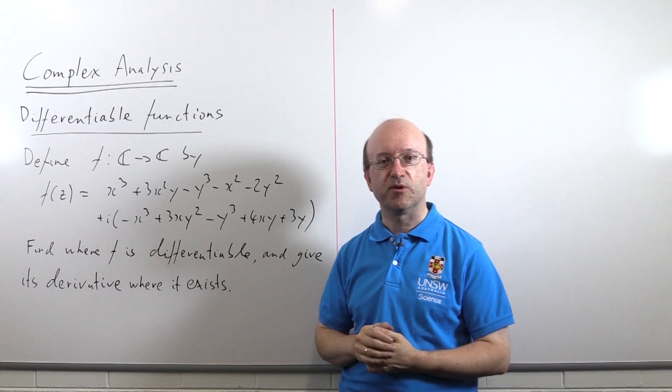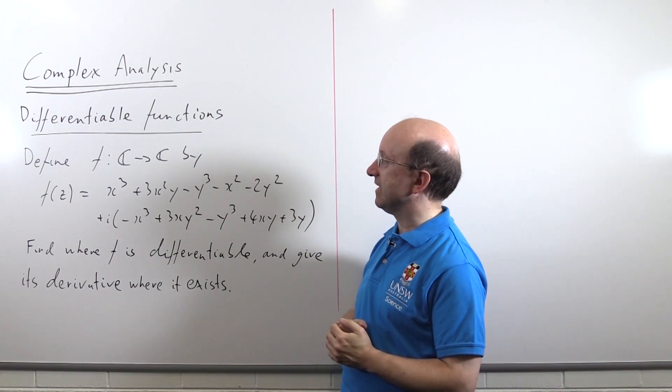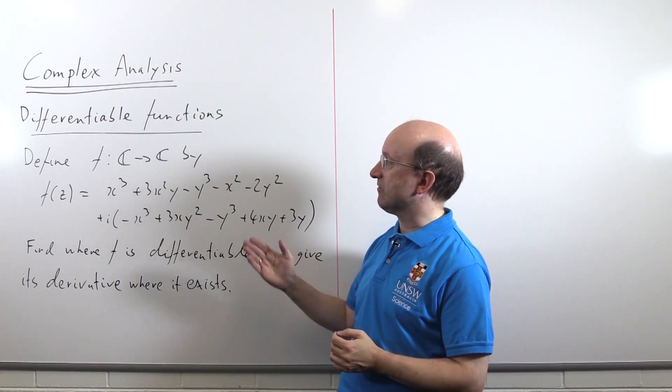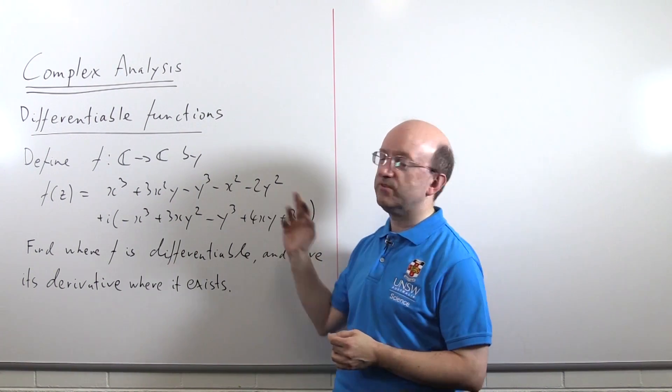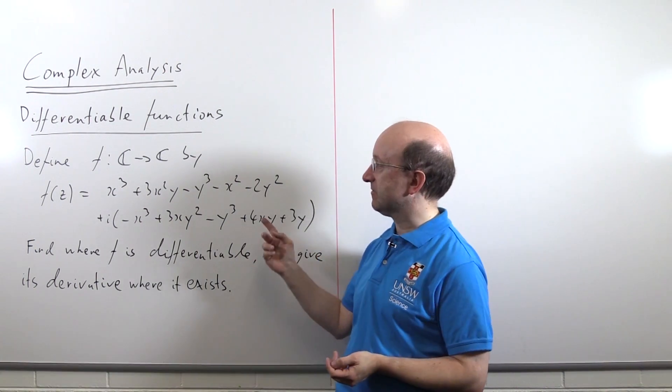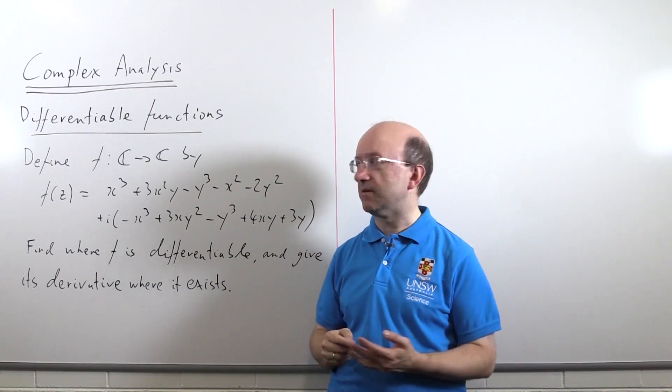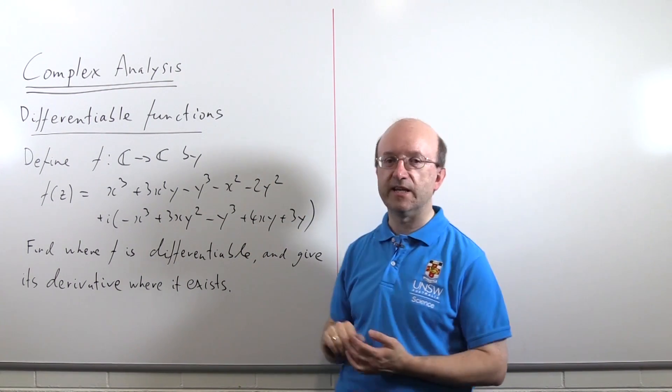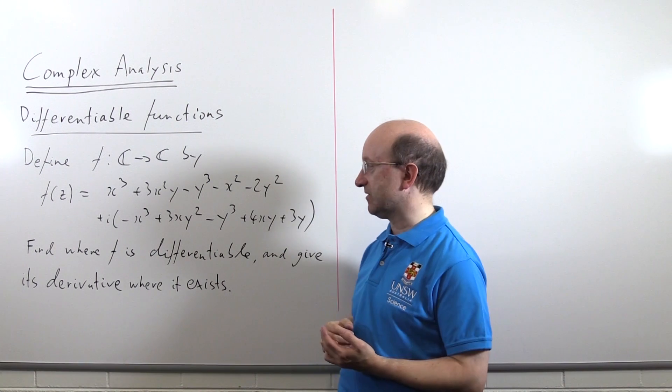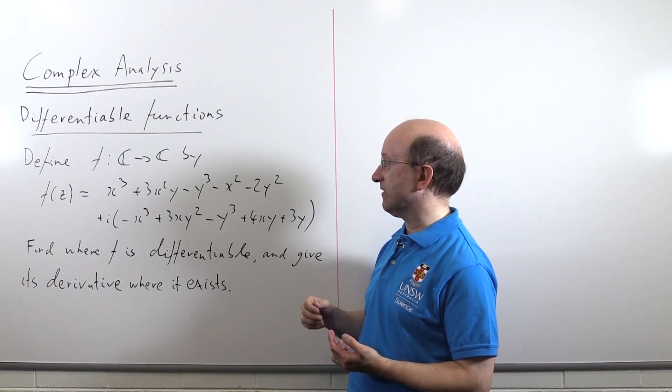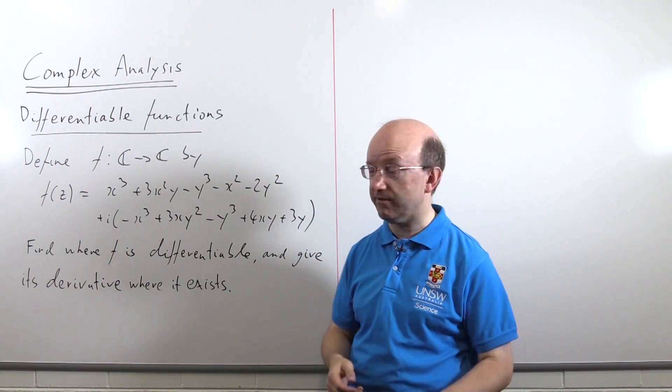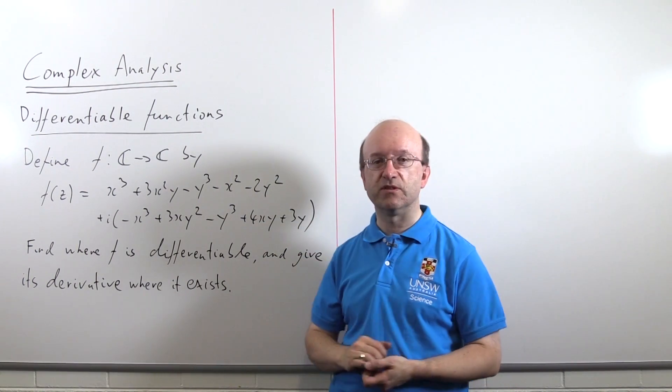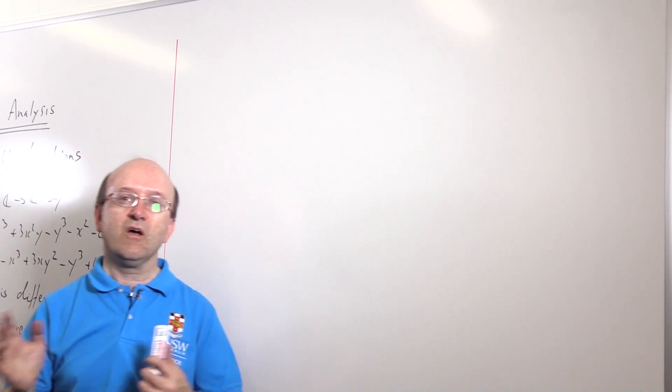Now, this is a typical sort of problem we can face as an application of the Cauchy-Riemann equations. We've got a function here defined from the complex plane to the complex plane, and it's been written in terms of the real and imaginary parts. Z is x plus iy, remember, and it's been explicitly written out in terms of those real and imaginary parts. And the question we're faced with is find where this function f is differentiable, assuming it's differentiable anywhere, of course, and to give its derivative where it exists.